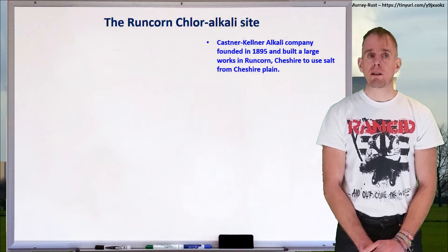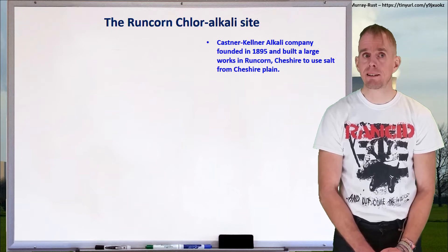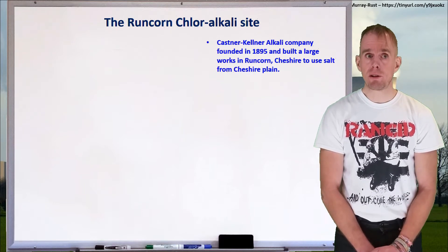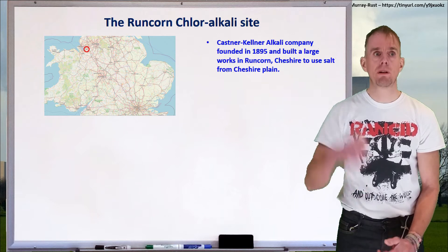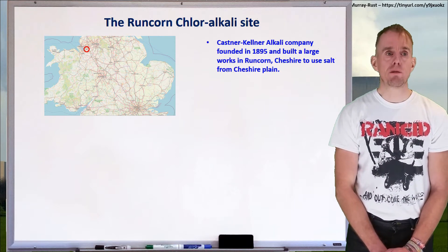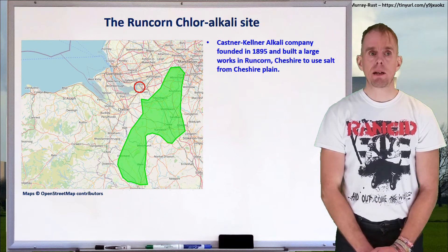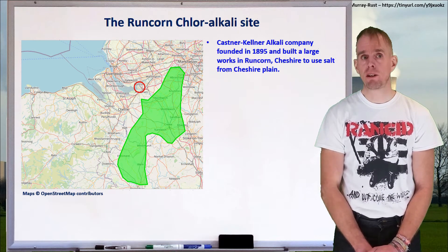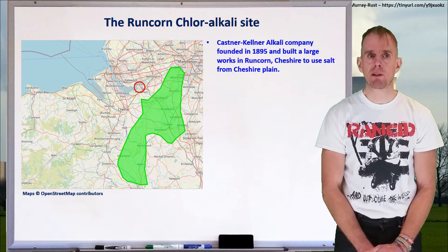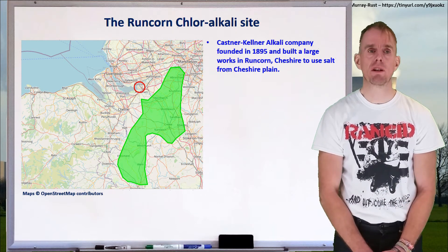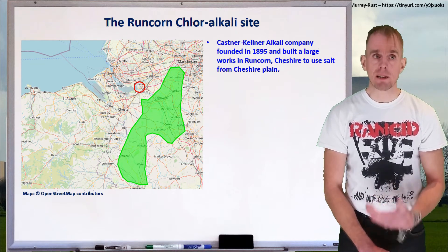I'd like to talk about a chloralkali site in the UK that started life in 1895 as the Kastner Kellner Alkali Company. It's in the northwest of England, in Cheshire, in a town called Runcorn — shown highlighted with a red circle on the map. Runcorn sits on the Cheshire Plain, which is the remains of a dried-out seabed from the Triassic era. About 200 metres down, you find vast reserves of rock salt — the remains of that dried-out sea — which is extracted by hot water and piped as brine into the processing plants.